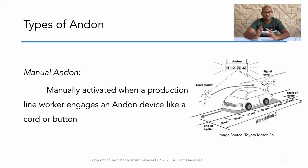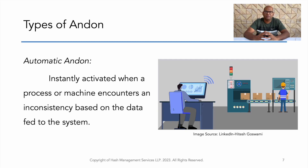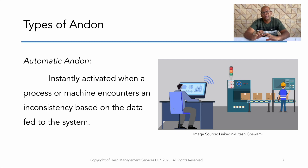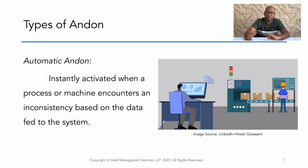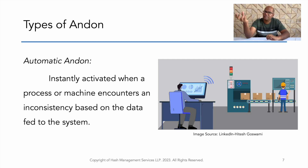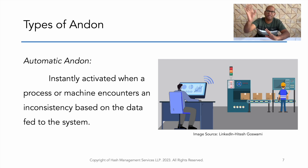The second type is automatic Andon. Nowadays, a lot of CNC machines come with inbuilt Andon lights — a small light strip that lights up in different colors. When the machine is running normally it lights green; if there is a small issue it lights yellow; if the machine is stopped and action is needed before it can run again, it lights red. This is automatic Andon because the machine itself has sensors or mechanisms to identify the issue and highlight it.